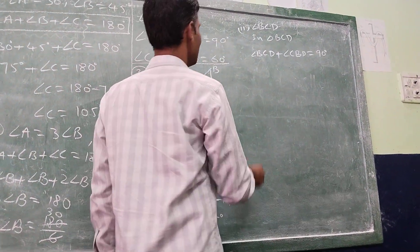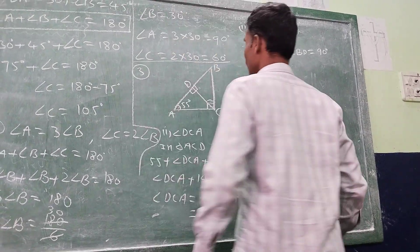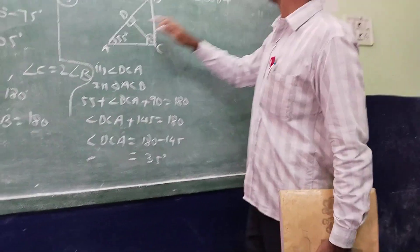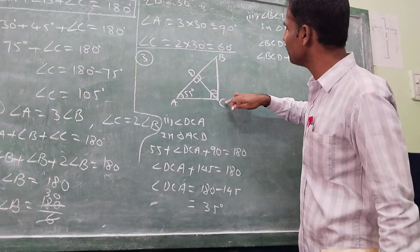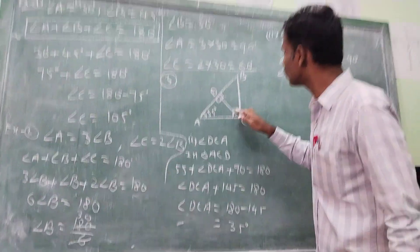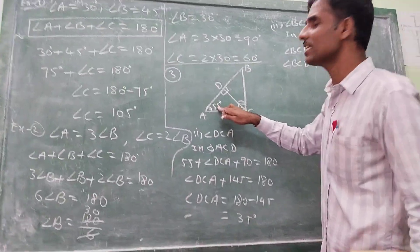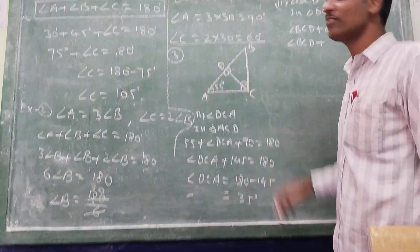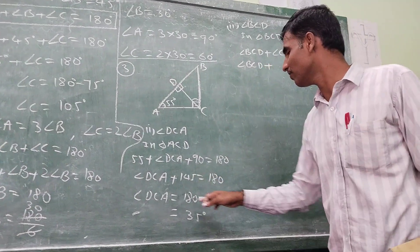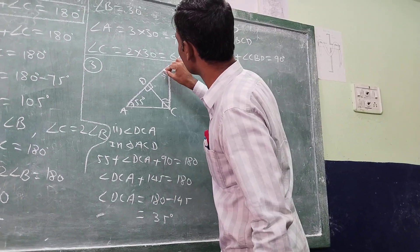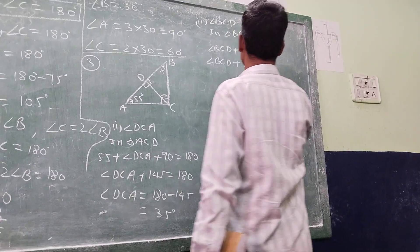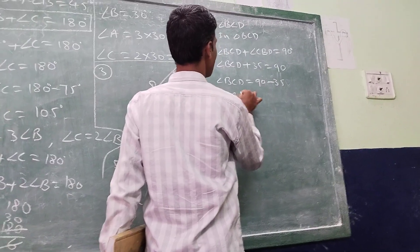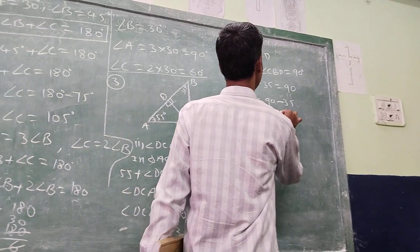Angle A equals 55 degrees is there. The total right angle is 90 degrees. So 90 plus 55 equals 145, and 180 minus 145 equals 35 degrees. That angle equals 35 degrees. So angle BCD equals 90 minus 35, which equals 55 degrees.